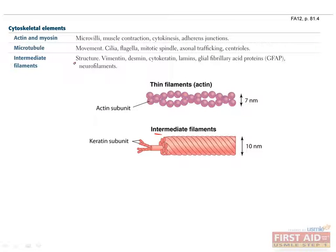Intermediate filaments are generally involved in cell structure and have an intermediate diameter of about 10 nm. Some examples of intermediate filaments include vimentin, desmin, cytokeratin, lamins, and glial fibrillary acid proteins, which are a histologic marker for astrocytes in the brain.